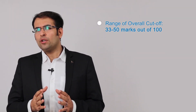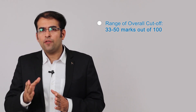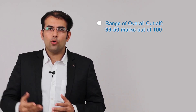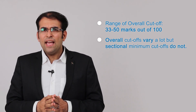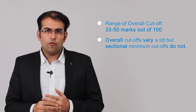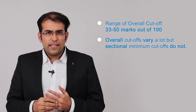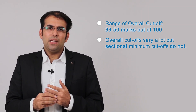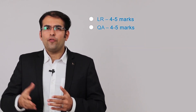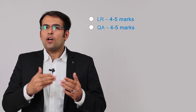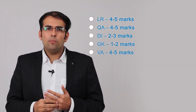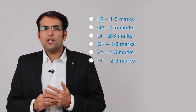The overall cutoff for IIFT is generally somewhere around 33 to 50 marks out of 100, and it depends purely on the level of difficulty of the paper. The sectional minimum, however, does not vary much and doesn't depend heavily on difficulty. Last year, the sectional minimum for Quant or Reasoning was around 4–5 marks, DI around 2–3 marks, GK around 1–2 marks, Verbal Ability around 4–5 marks, and Reading Comprehension around 2–3 marks.